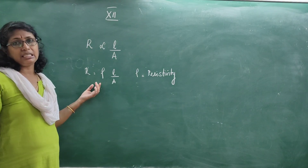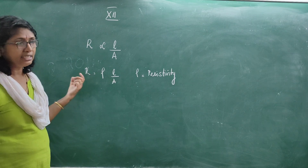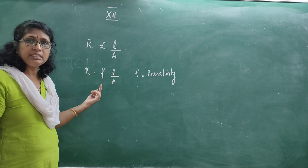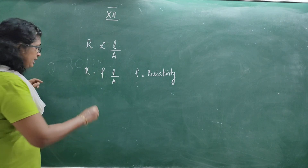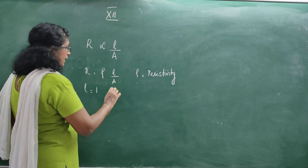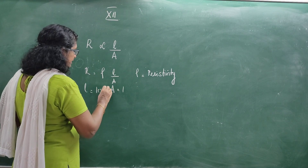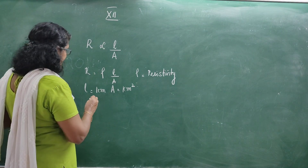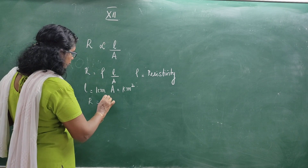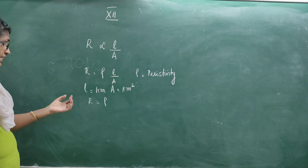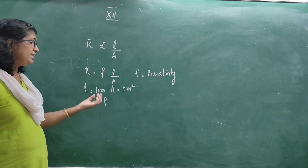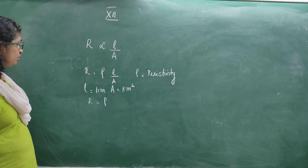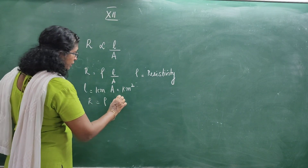The resistivity of a conductor is the resistance of a conductor whose length is unit length and area of cross section is also unit — that is, L = 1 and A = 1. If L is 1 centimeter, A will be 1 centimeter square; if L is 1 meter, area will be 1 meter square. Then R = ρ, so resistivity is the resistance when both length and area are unit.